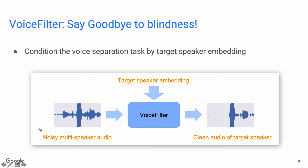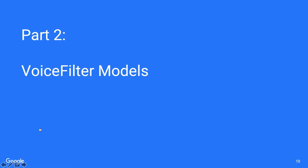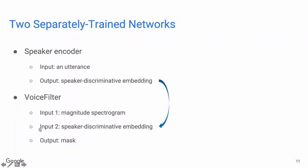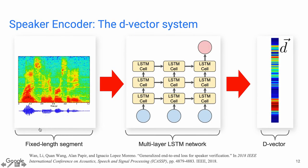We make use of the speaker embedding, which can be acquired during user enrollment. This speaker embedding will condition the separation system to output the clean signal from only the target speaker. We basically have two models, trained separately with different datasets. The speaker encoder model takes an utterance as input and outputs a speaker-discriminative embedding. The VoiceFilter model takes both a noisy spectrogram and the embedding as input and outputs a mask. The speaker encoder is also known as the D-vector system — it's basically a multi-layer LSTM network. You can find more details in the corresponding paper.